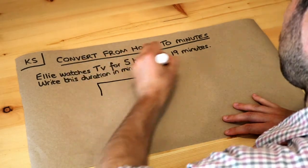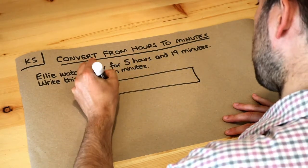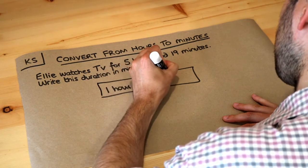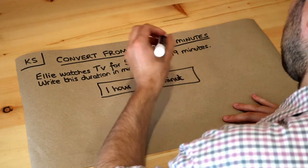Now the only thing you need to know in this video is that one hour is the same as 60 minutes, just like one minute is the same as 60 seconds.